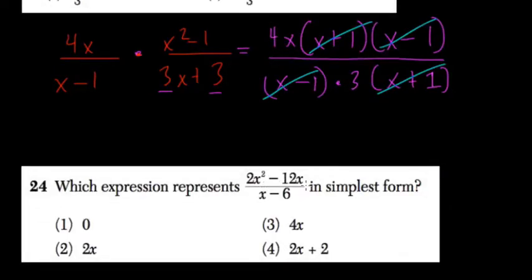Here we're trying to find this in simplest form. Well, what we want to try to do is factor things out in our numerator to cancel them out.